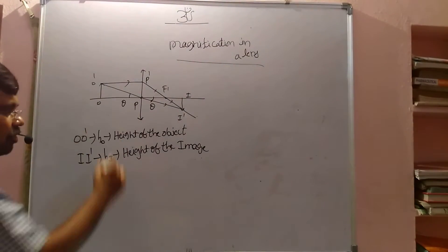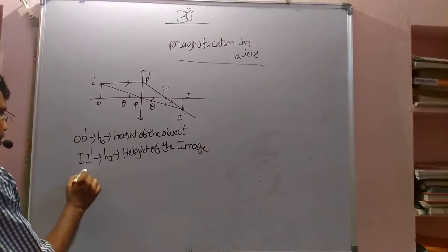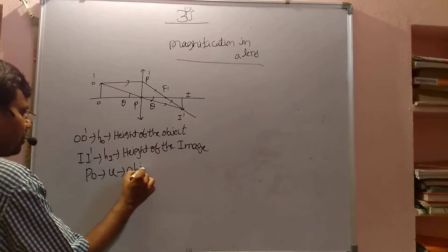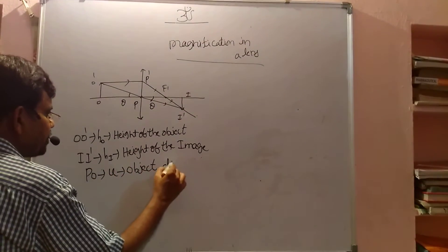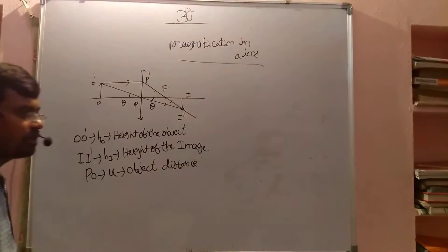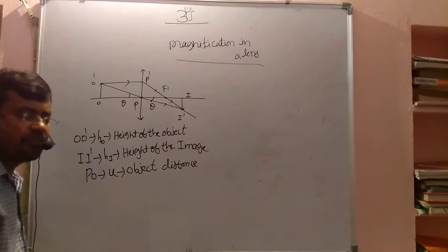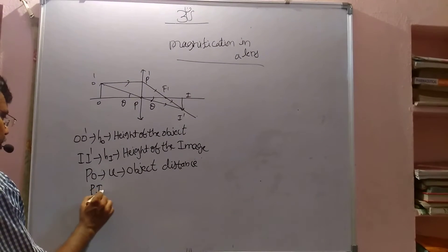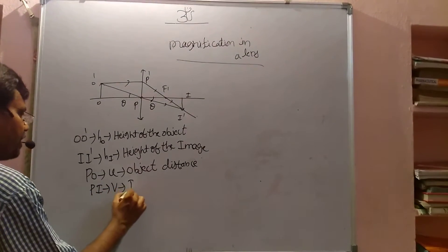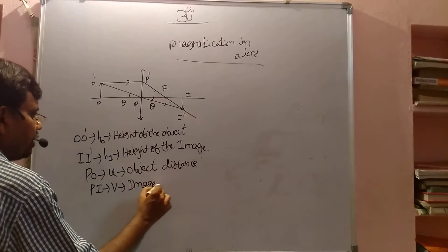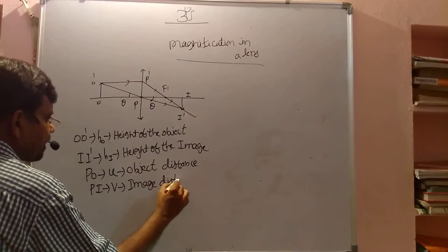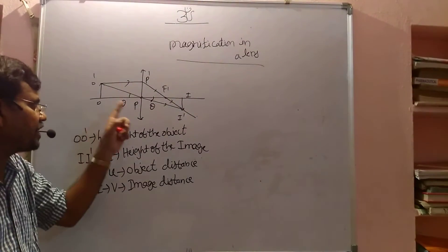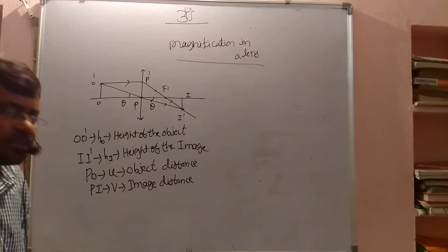PO is the object distance, which we call U. PI is the image distance, which we call V.